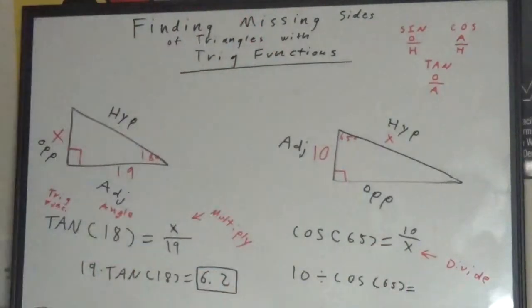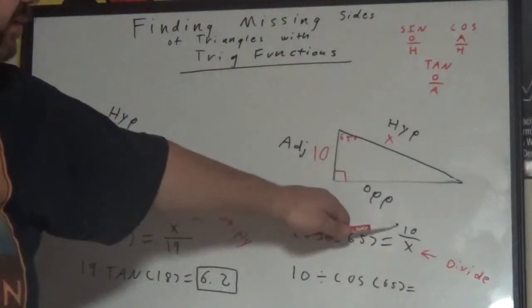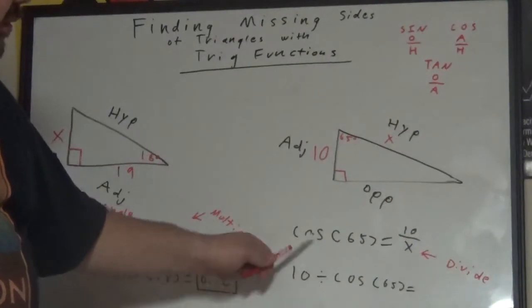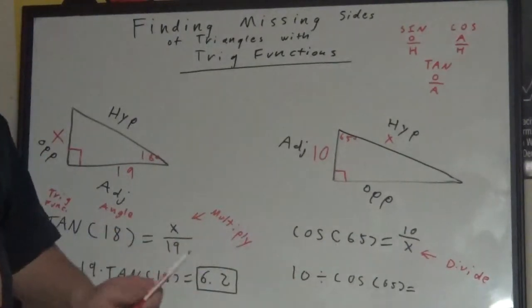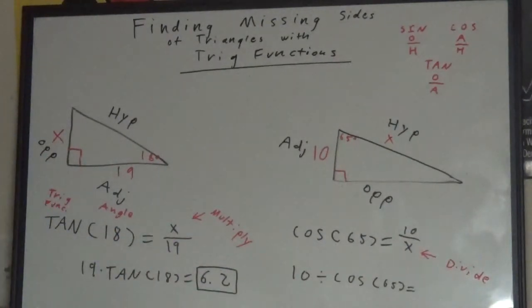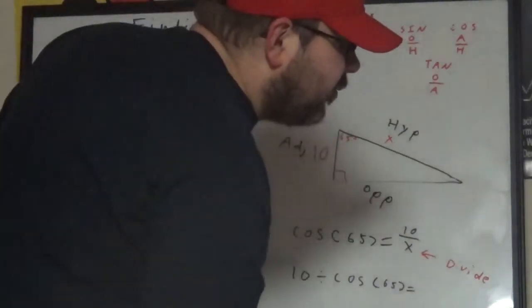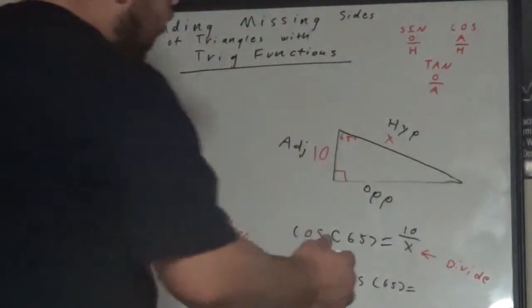Again, in your calculator, you are going to take 10 divided by cosine 65. Hit the cosine 65. Hit enter. And I have the answer here, that is 23.7.